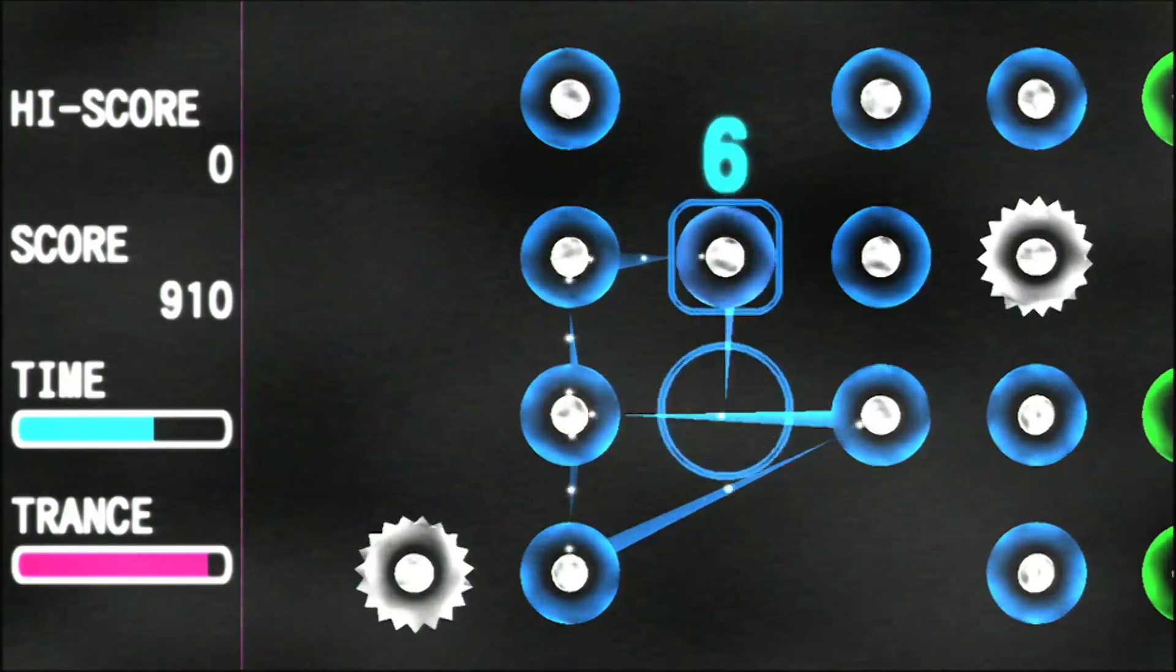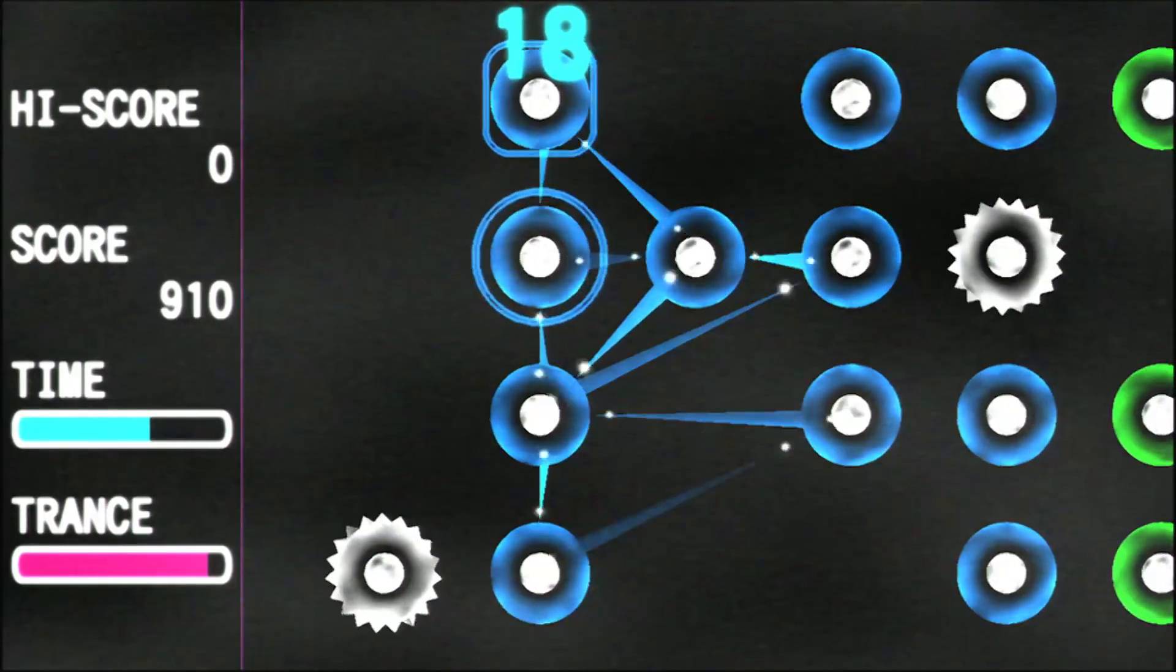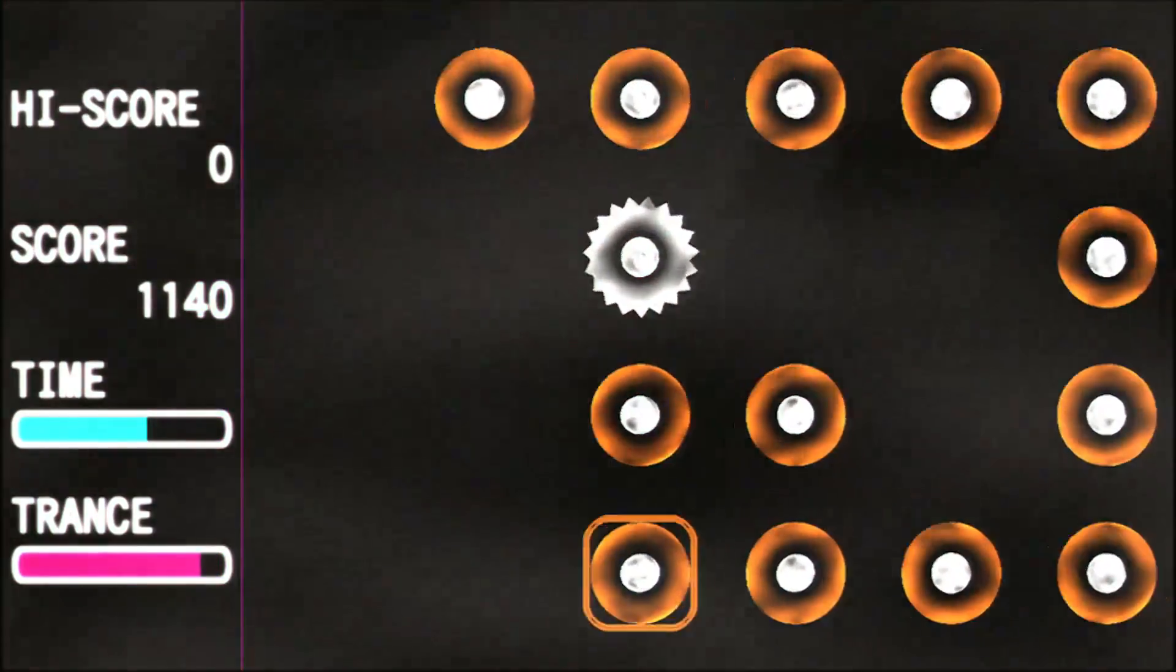A couple loops, and you've turned a cluster of 8 or 10 neurons into 60 or 70 points, which, once the gray matter hits that line dividing the playfield from the score, gets converted into fuel for the trance gauge.